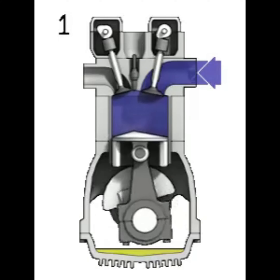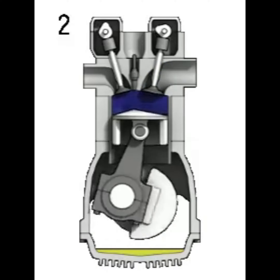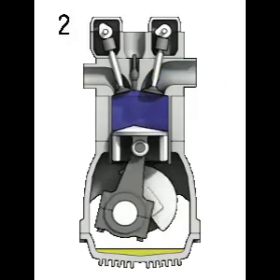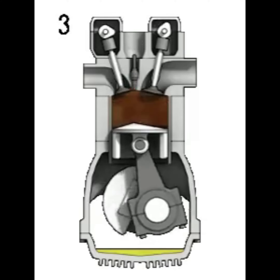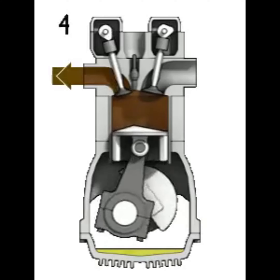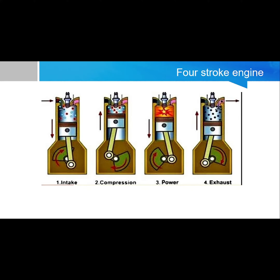Combustion stroke, also known as the power or ignition stroke: This is the start of the second revolution of the four-stroke cycle. At this point the crankshaft has completed a full 360-degree revolution. While the piston is at TDC, the compressed air-fuel mixture is ignited by a spark plug or by heat generated by high compression, forcefully returning the piston to BDC. This stroke produces mechanical work from the engine to turn the crankshaft.